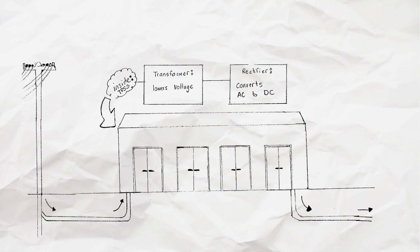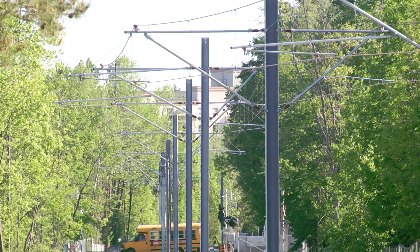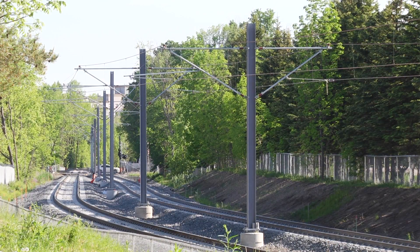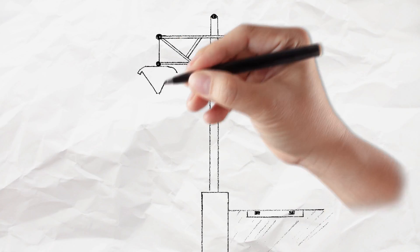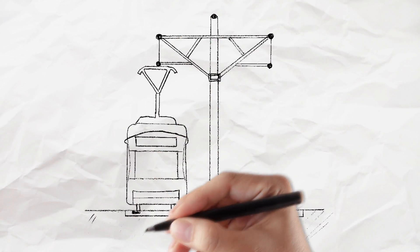From the TPSS, power runs to the overhead catenary lines, the electric wires along the ION route. These wires are built above the track on poles that are generally 21 feet tall, about the size of a regular hydropole.